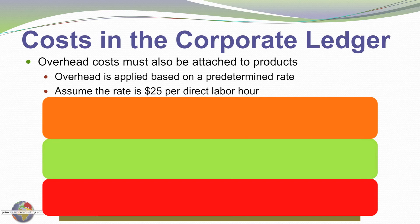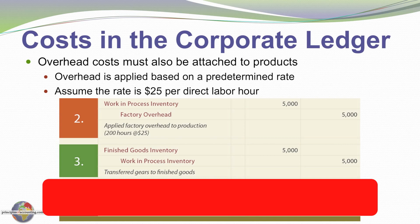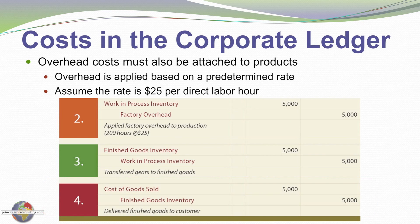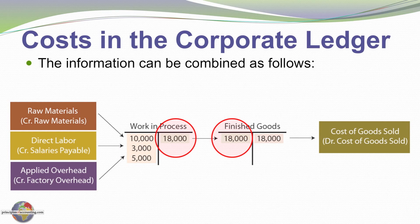Overhead is the third cost component. Assuming we apply overhead at $25 per direct labor hour based on our predetermined application rate, as we incur 200 hours of direct labor we assign $5,000 to work in process, crediting factory overhead. When we finish the goods, we transfer that same $5,000 to finished goods inventory, and finally on to cost of goods sold. In the aggregate, materials, labor, and overhead — totaling $18,000 — are assigned to work in process and eventually flow to cost of goods sold.